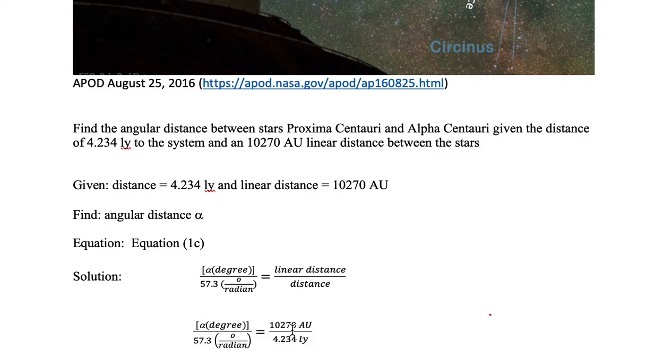Now notice we can't divide the right-hand side just yet because the letters don't divide out. We need to first convert out of AU and into light year or light year into AU so that everything cancels. So let's add in a conversion factor.